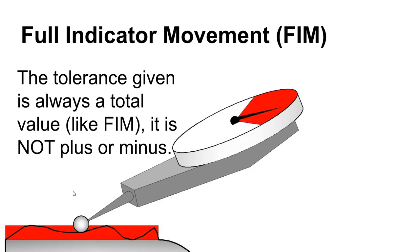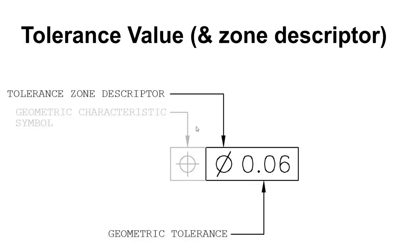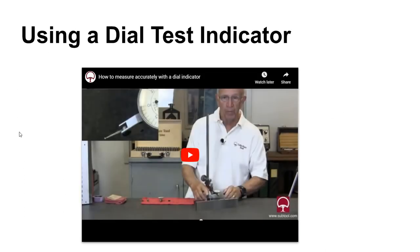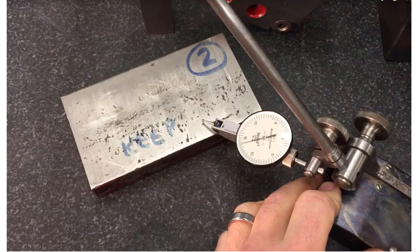You take a dial indicator and sweep it across the surface you're evaluating. The amount of sweep — not the plus or minus, but the overall distance the dial indicator moves — is the full indicator movement. That's generally what's in the feature control frame. If you're not sure what a dial indicator is, Suburban Tool has a nice video on how to set up and use a dial test indicator.